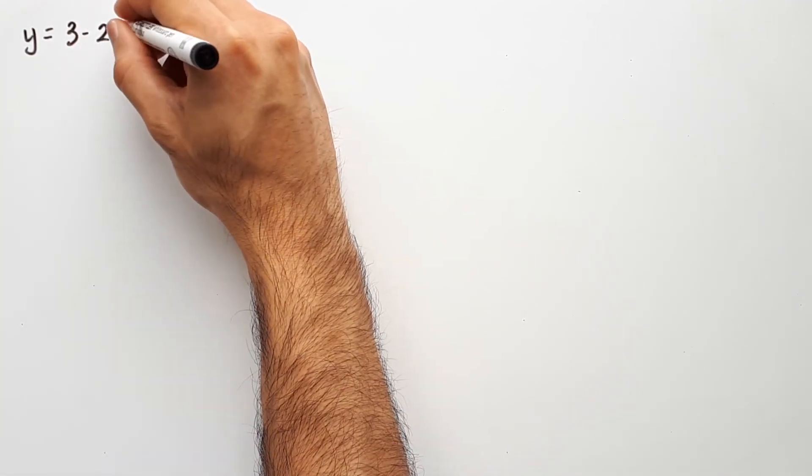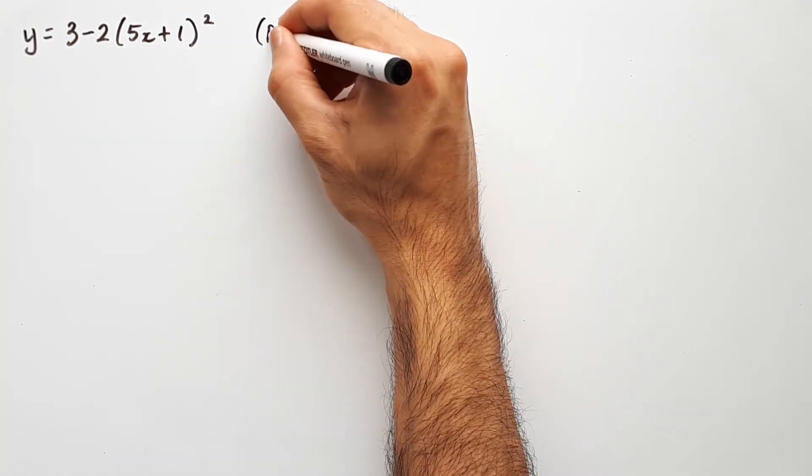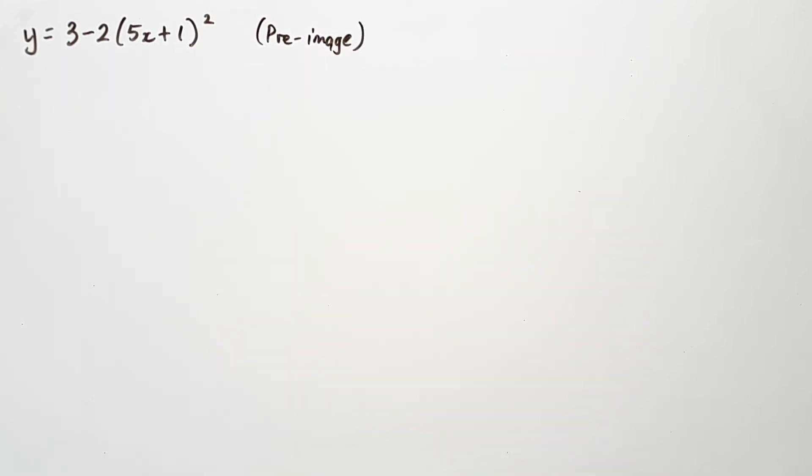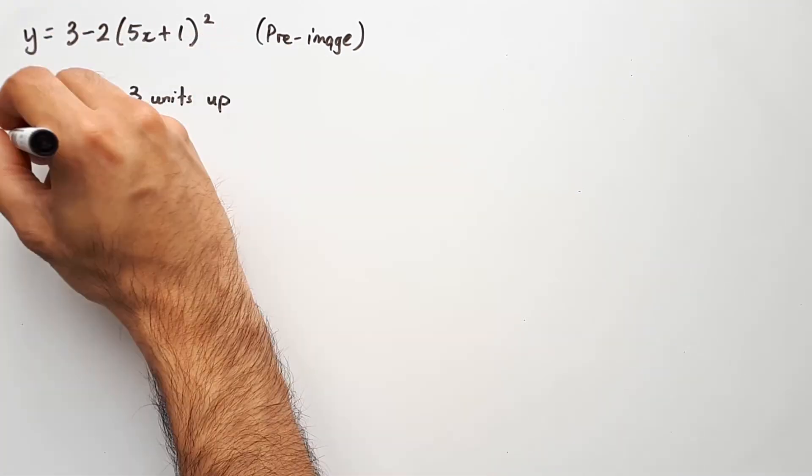In our second question we have y equals 3 - 2(5x + 1)² as our pre-image equation, and we want to find out what this looks like as an image once we transform it using the following sequence.